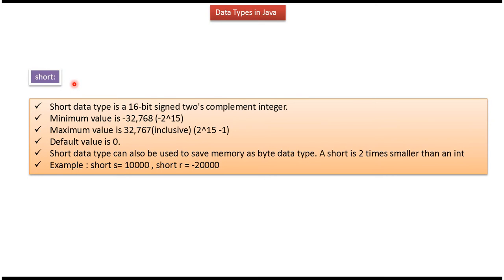Second data type is short. Short data type is a 16-bit signed two's complement integer. Minimum value is minus 32768 and maximum value is 32767, and default value is 0. Short data type can also be used to save memory as byte data type, and a short is two times smaller than an int. Here you can see how to declare short.